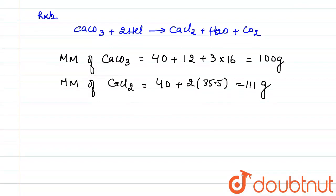Now further from the reaction what we observe is that one mole of CaCO3 gives one mole of CaCl2. So what we can write is for 100 gram of CaCO3, it will form 111 gram of CaCl2.